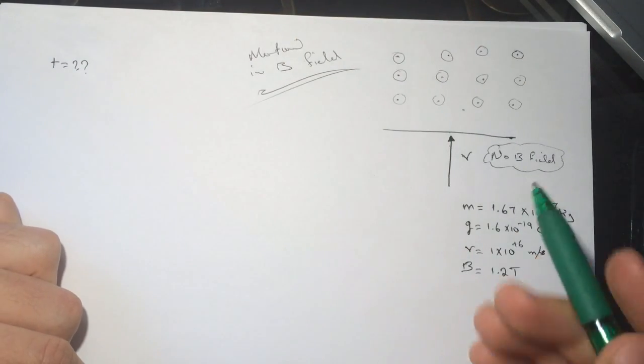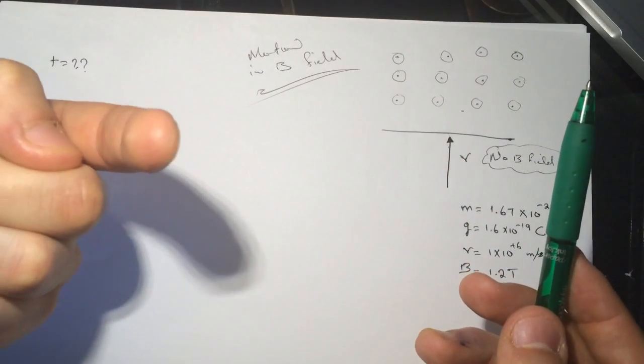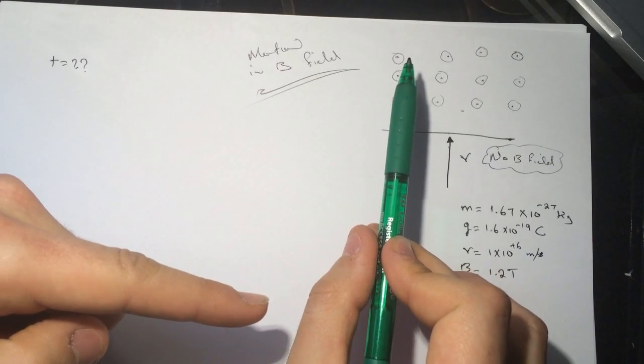...then the magnetic field is going up, out of the screen, and the V is going this way. Let's call it y positive.